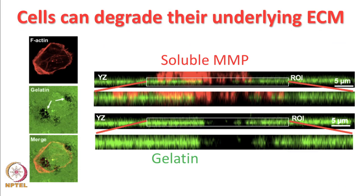Cells can also degrade the matrix underneath. In an experiment where cancer cells are plated on fluorescently labeled gelatin-coated dishes, you see black patches right underneath the cells corresponding to zones locally degraded by the cell. The cells are stained for F-actin and plated on top of these matrices.